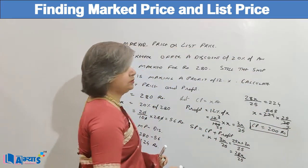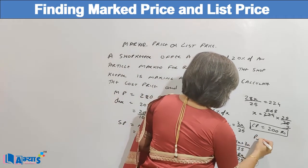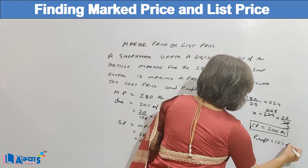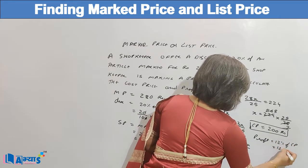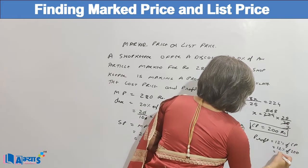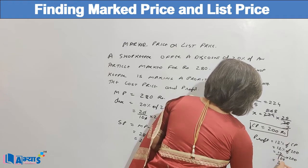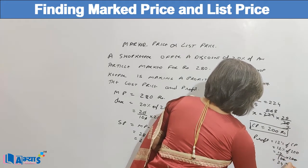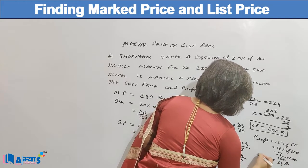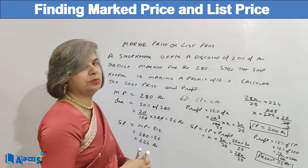Next, we calculate the profit. Profit is 12% of CP, or 12% of Rs. 200, that means 12/100 × 200, which equals Rs. 24. So the profit is Rs. 24 and the cost price is Rs. 200.